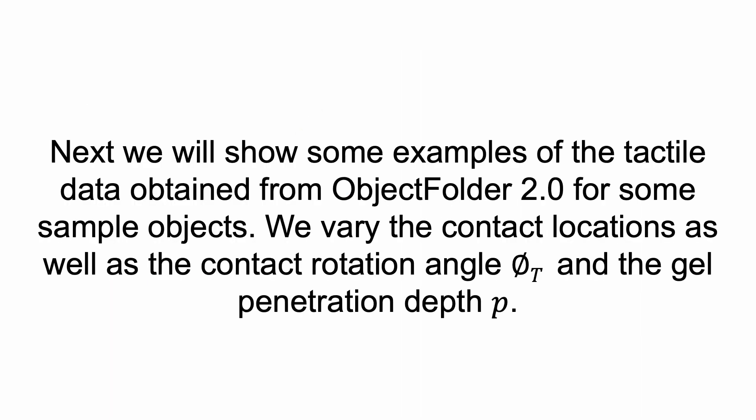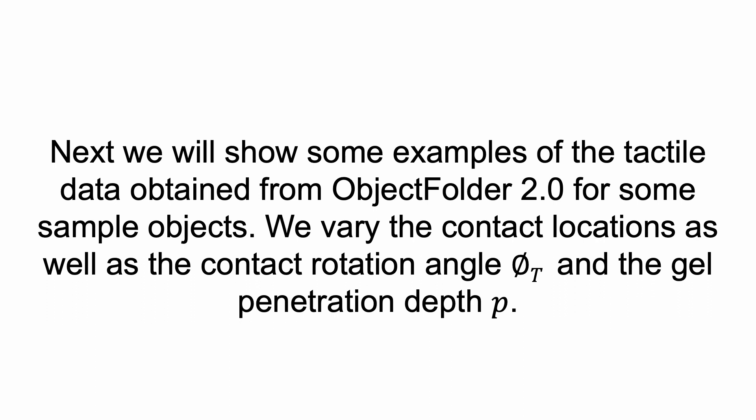Next, we show examples of the tactile data obtained from Object Folder 2.0 for sample objects. We vary the contact locations, the contact rotation angle, and the gel penetration depth. In Object Folder 1.0, only a single tactile image can be rendered per vertex. Our new TouchNet can accurately render tactile readings of varied rotation angles and gel deformations, which is more realistic and flexible. As shown, varying the contact rotation angle and gel penetration depth causes the tactile images to change accordingly.